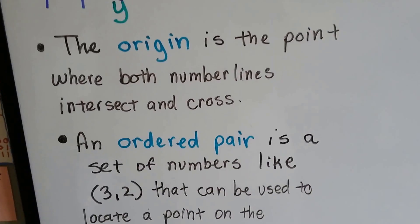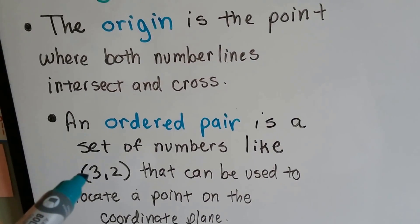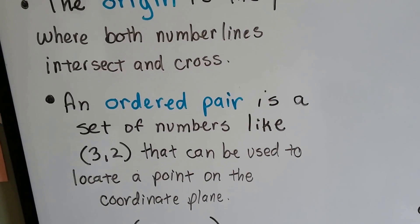An ordered pair is a set of numbers like three and two that can be used to locate a point on a coordinate plane.